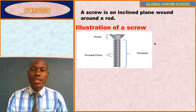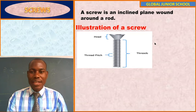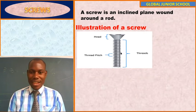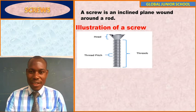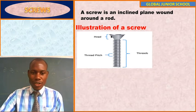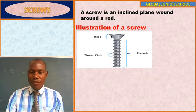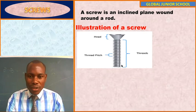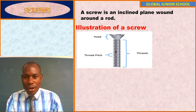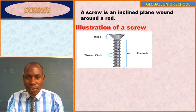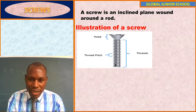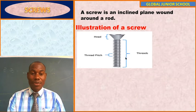So, what is a screw? A screw is an inclined plane wound around a rod. Now, this is an illustration of a screw. A screw has got some parts. There is this part that we call the head — that's where you place the screwdriver. There is a provision where you place the screwdriver around the head of a screw. A screw also has this inclined plane winding around a rod. That inclined plane winding around a rod is what we call the threads.